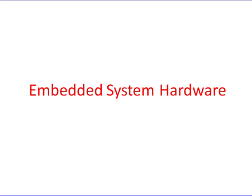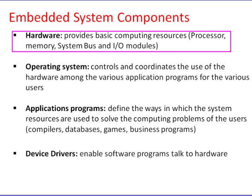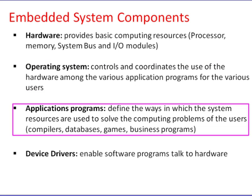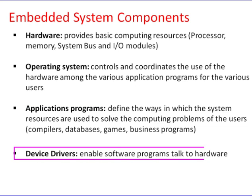In this video we talk about the functional aspect of the hardware used in embedded systems. An embedded system is a combination of hardware and software components. Hardware provides basic computing resources: processor, memory, system buses, and I/O modules. The operating system controls and coordinates the use of the hardware among various application programs. Application programs define the way system resources are used to solve computing problems. Device drivers enable software programs to talk to hardware.